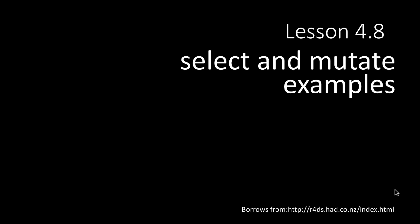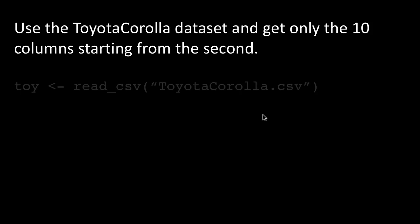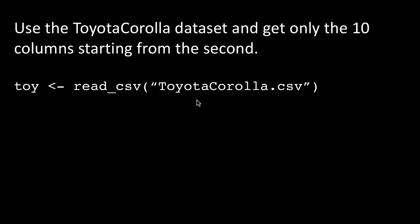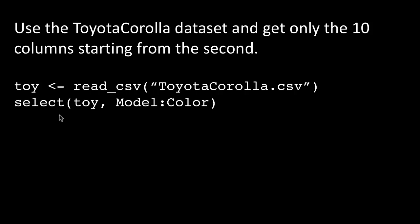In this lesson we'll take a look at some integrative examples of select, mutate, and transmute. Let's use the Toyota Corolla dataset and get only the 10 columns starting from the second column — in other words, columns second to the 11th. We use read_CSV to read the file, then say select(toy, model:color). To know that model to color is the second to 11th columns, I did names(toy) and found it out.